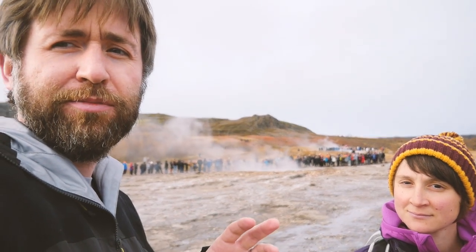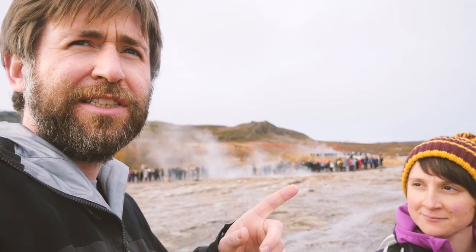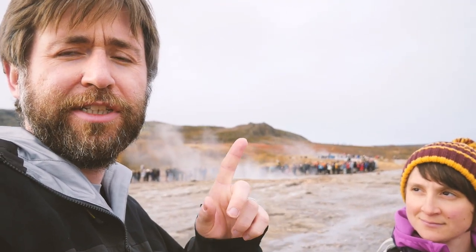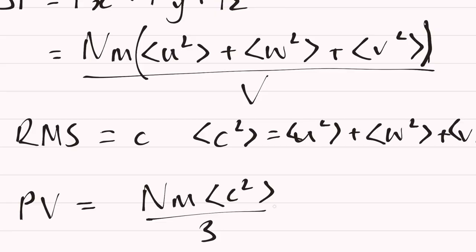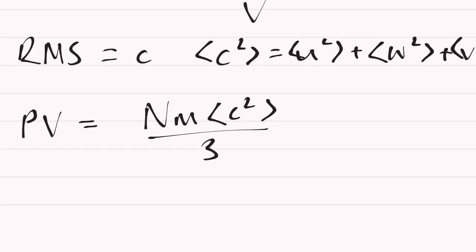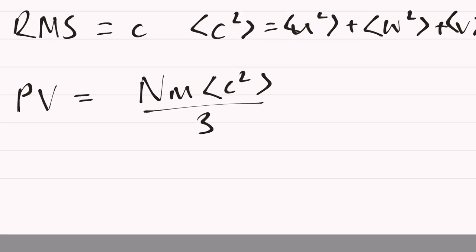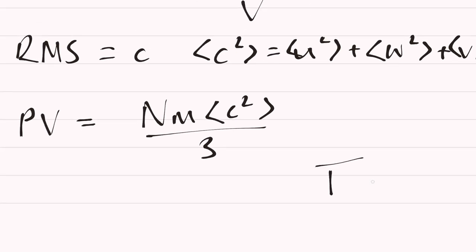We're interested in the scalar form of the particles' motion because we're talking about kinetic energy. This equation essentially shows that temperature is proportional to the average kinetic energy of the molecules. The average kinetic energy uses the root mean square speed c², and kinetic energy is ½mv², so the average kinetic energy here is ½mc².